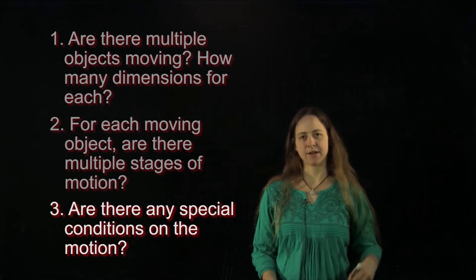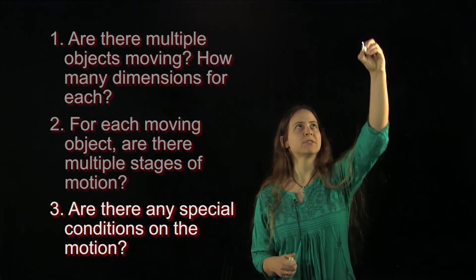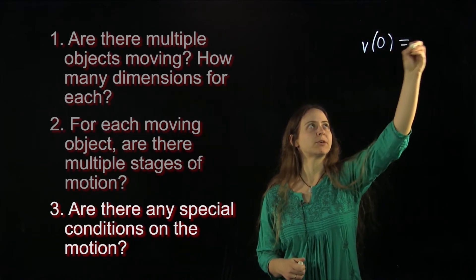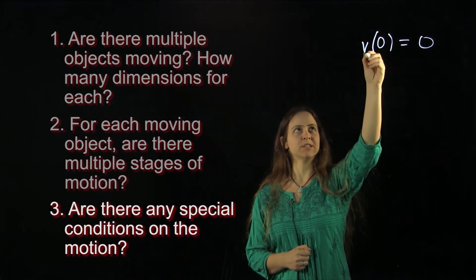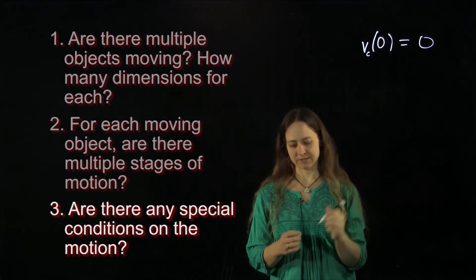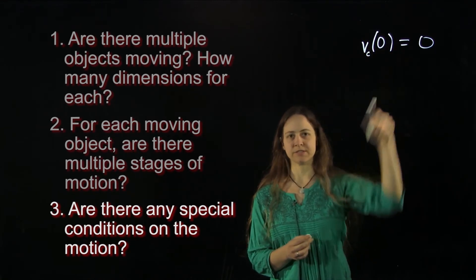It means you can write down something like v(0) = 0. That's what it means for the cart to initially be at rest: v at time zero equals zero.